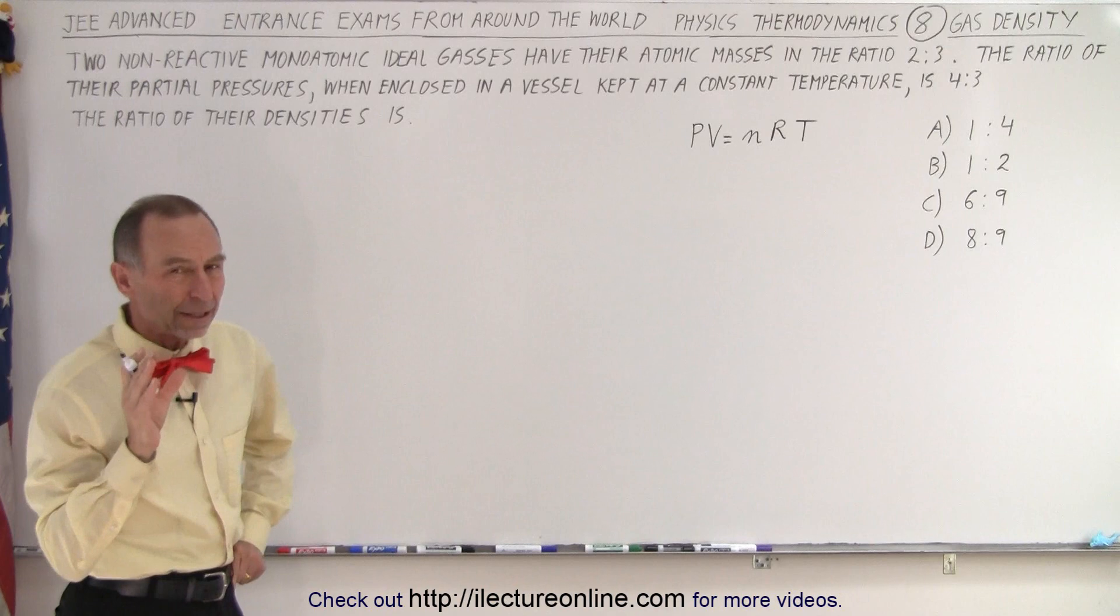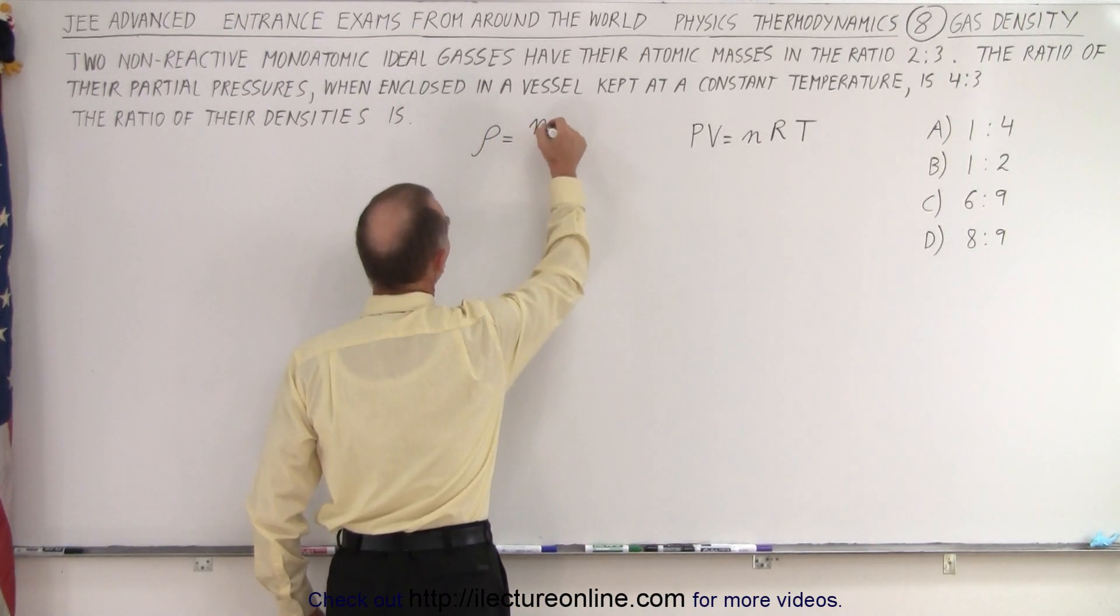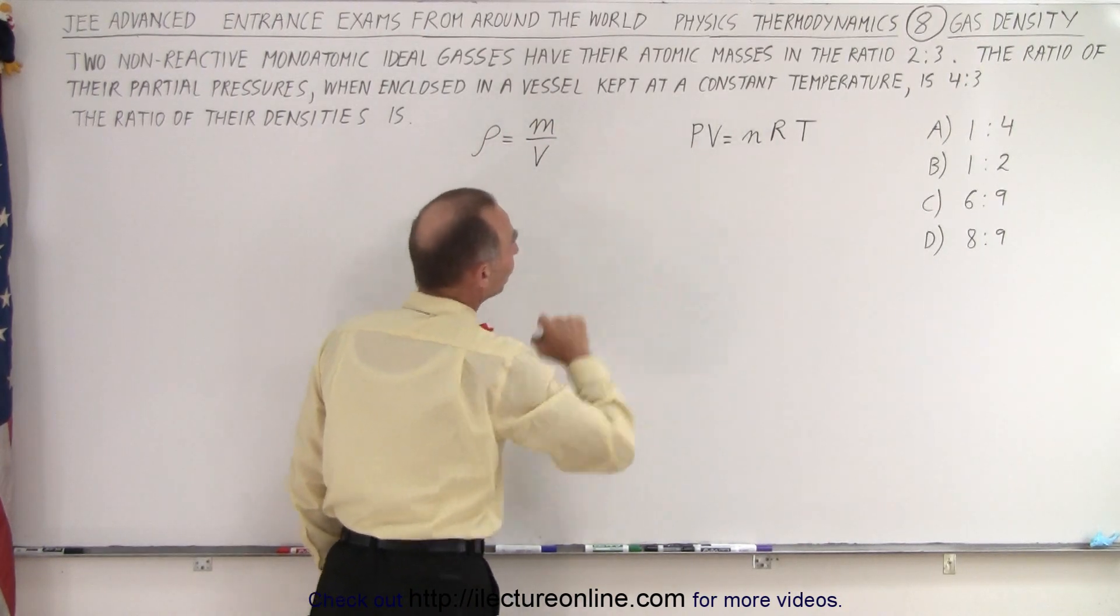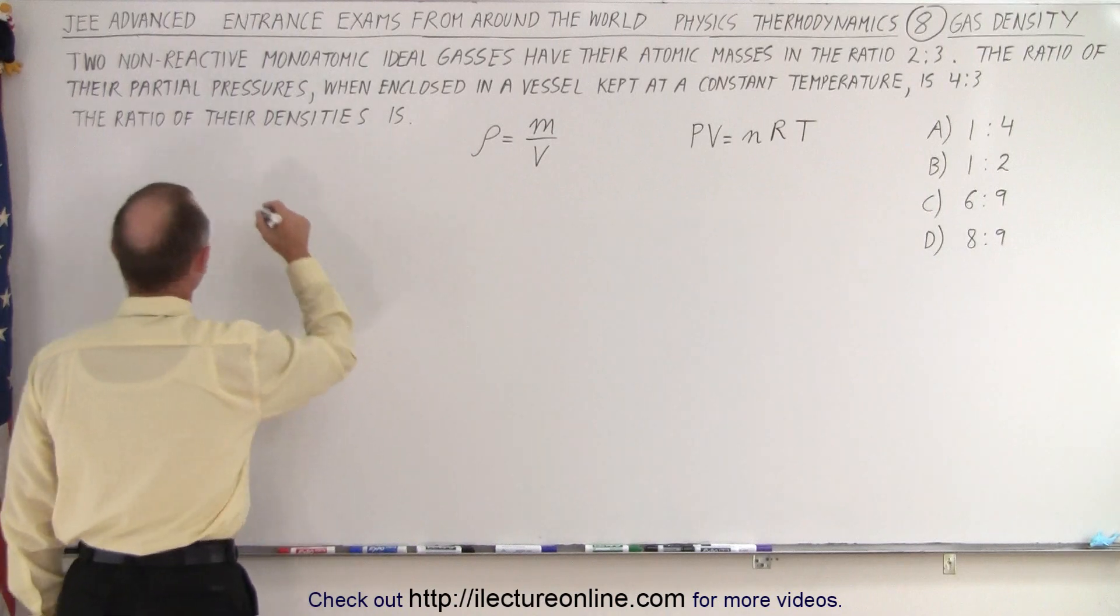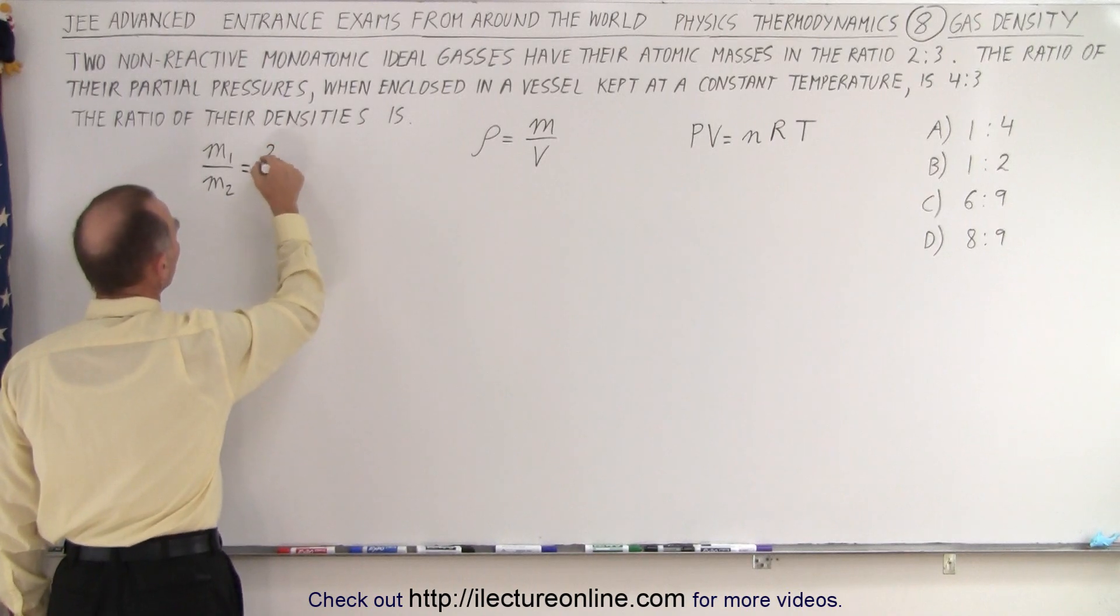And then we need the equation for the density. By definition, the density is equal to the mass divided by the volume. Now notice, they give us the ratio of their masses. So we could say that mass 1 divided by mass 2, the ratio of their masses, must be 2 to 3.